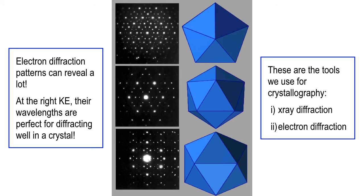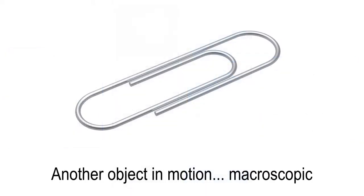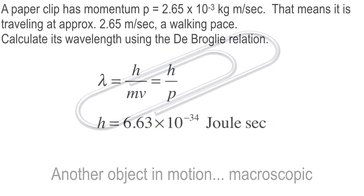Electrons at normal everyday accelerations — J.J. Thomson could have done this if he'd thought to. Crystal spacings are very tiny, on the order of nanometers and tenths and hundredths of a nanometer, and electrons and X-rays are quite good for that. Now let's talk about a macroscopic object — a paper clip. A paper clip is about a gram of mass. We're going to calculate its wavelength using Planck's constant.